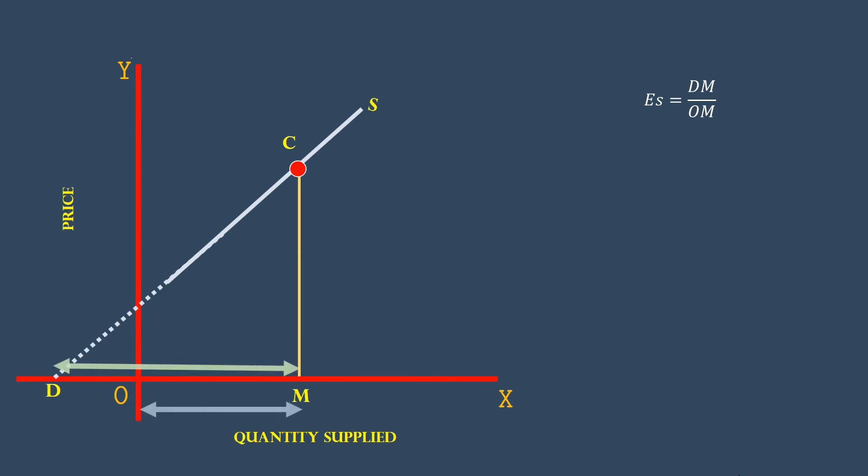If DM is greater than OM, supply is relatively elastic. Look at this graph. The lower segment of the supply curve passes through the Y-axis and touches the X-axis to the left of the origin. DM is greater than OM. Supply is relatively elastic.